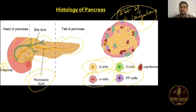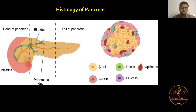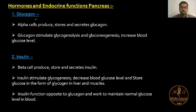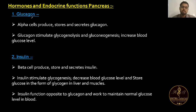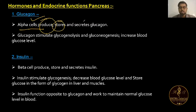This was the histology of pancreas. Now, the hormones and their functions: the first hormone is glucagon, secreted from alpha cells. Alpha cells produce, store, and secrete glucagon. Glucagon stimulates glycogenolysis.